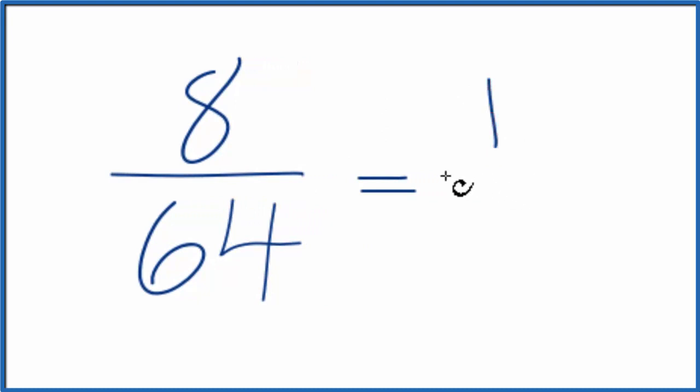8 divided by 8 is 1, and then I can divide the denominator, 64 divided by 8 is 8. We've simplified the fraction 8/64 down to 1/8.